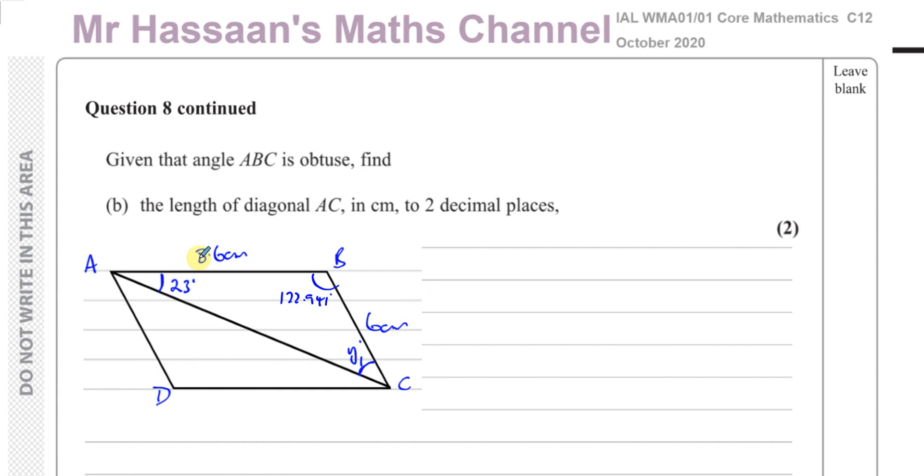So basically, so far we've found, we've got a parallelogram, we've found this obtuse angle ABC. They've told us to use an angle that's obtuse rather than the other way because the diagram could have been drawn like that as well. So they want us to use the obtuse angle, not the acute angle, and they want us to use that to find the length of the diagonal AC. The length of the diagonal AC.